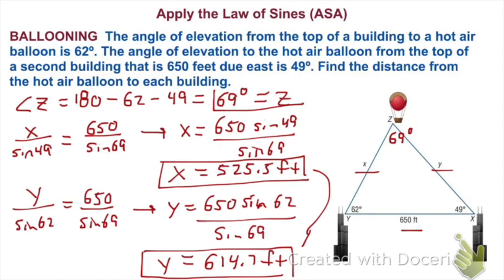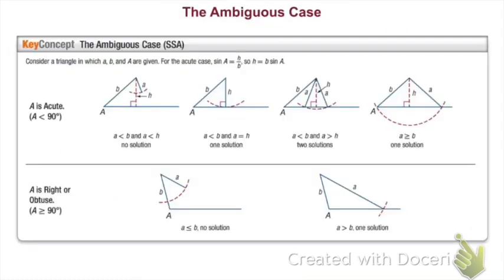That's basic Law of Sines. Now we're going to look at the ambiguous case, where we use the Law of Sines with side-side-angle. If we are given sides A and B and angle A, this is side-side-angle. There are a couple of different things that can happen, and it shows that sine of A equals H over B, so the height of our triangle is H equals B times sine A.